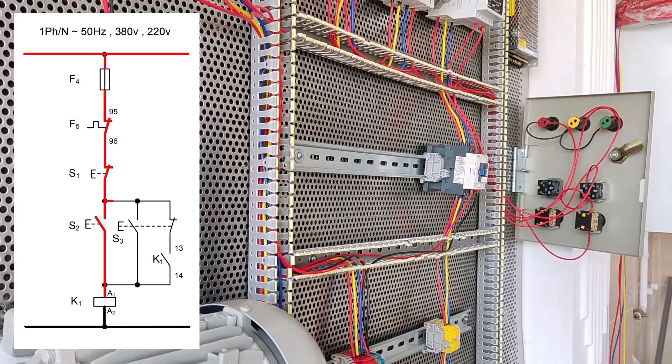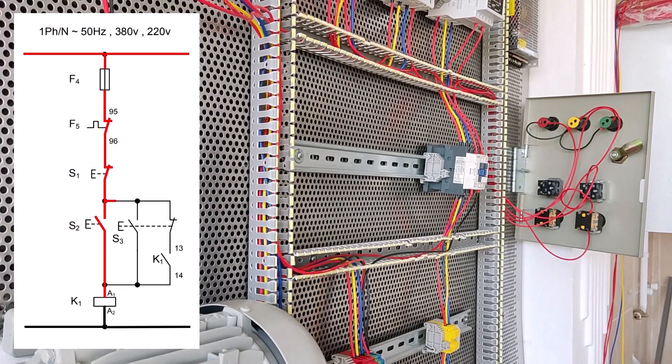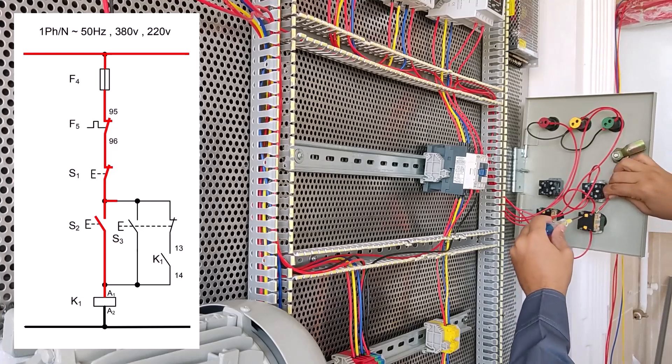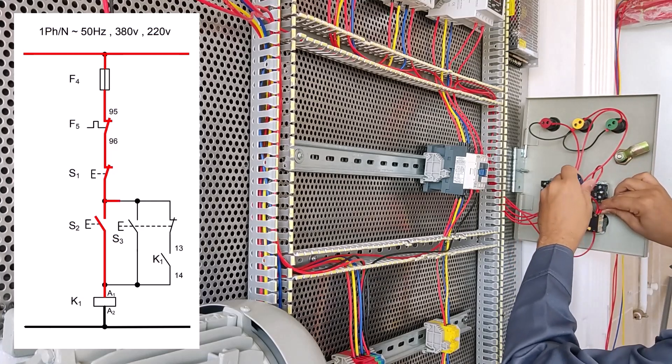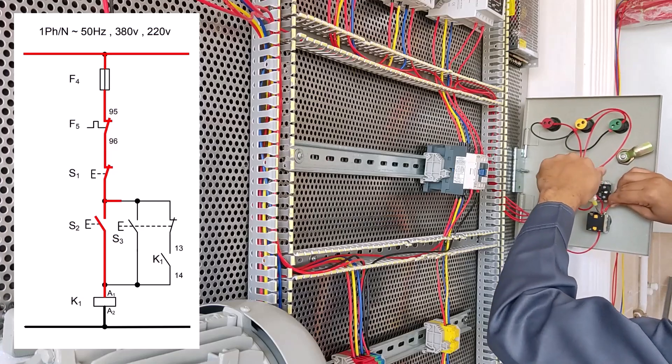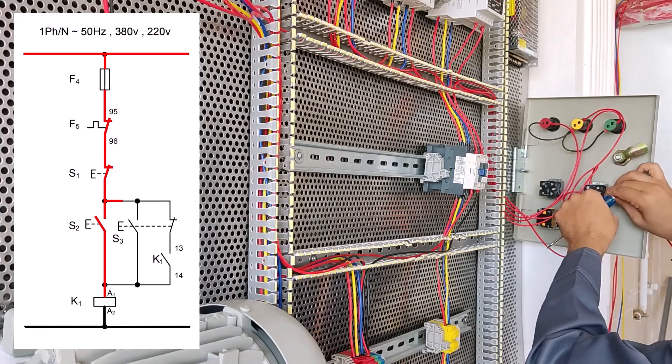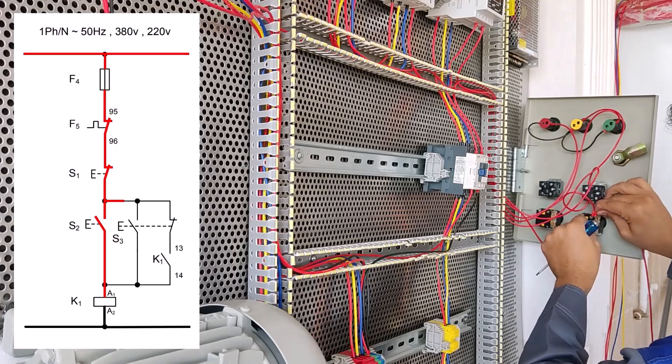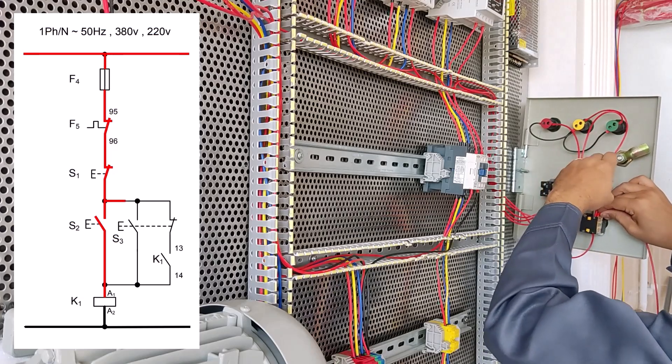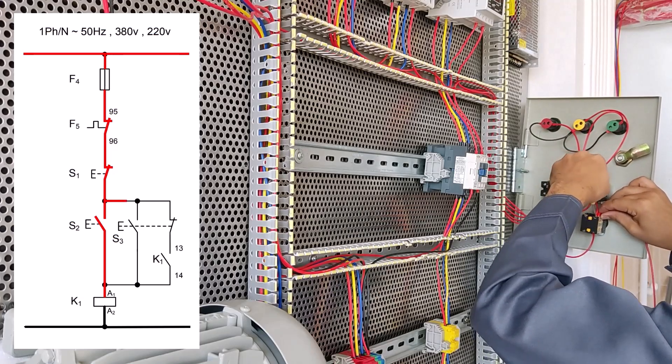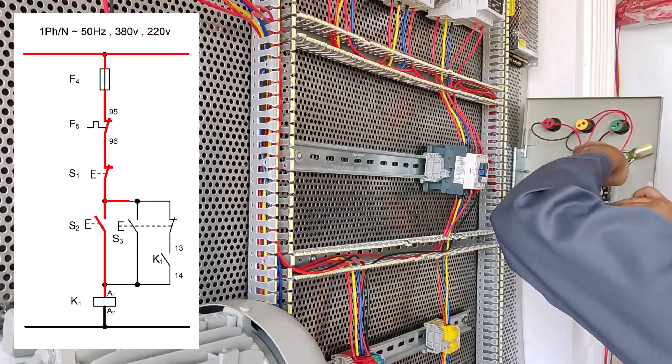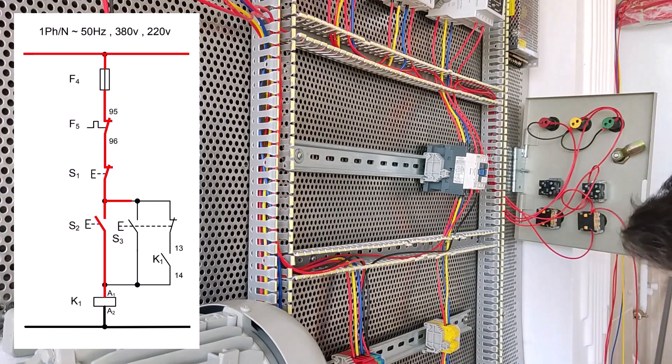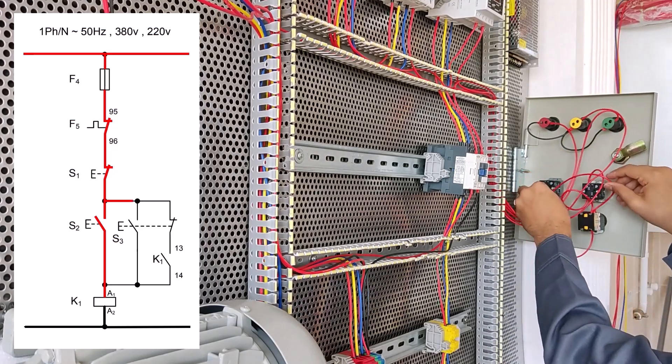Now we connect the 13 and 14 starter S2 to 13 and 14 start S3. Start S2 is for permanent work and starter S3 is for a moment. Now connect 13 starters S2 to 13 starters S3.